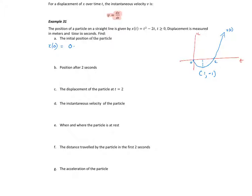So my particle starts at the origin. After 2 seconds, x(2) is 2 squared minus 4, which is equal to 0 again. So after 2 seconds we haven't moved anywhere. That means the displacement after 2 seconds is equal to 0, as opposed to the distance we've travelled. In the first second I go down to negative 1, and in the second second I come back up to 0. So the distance travelled is 2 metres, but my displacement is 0.